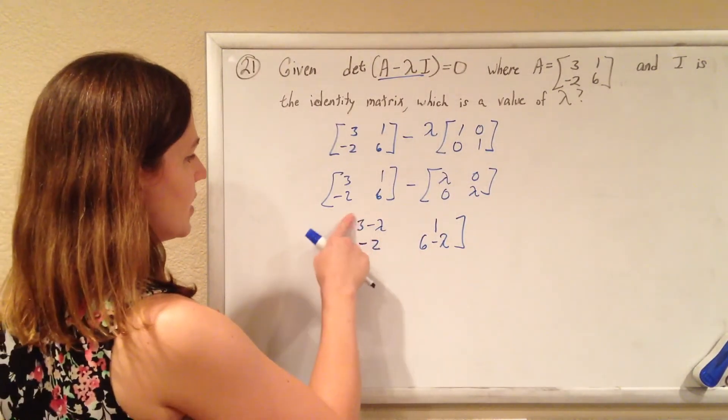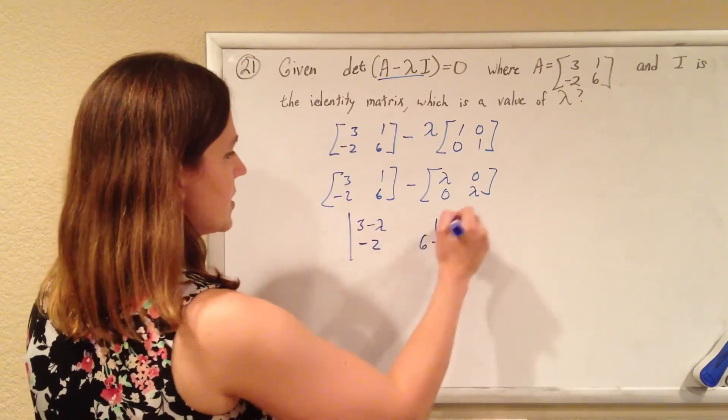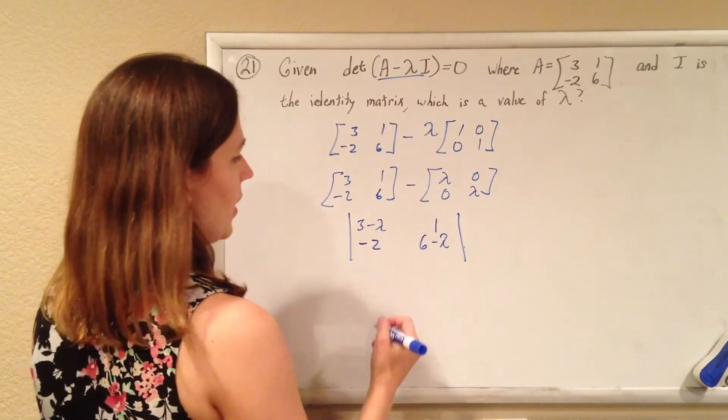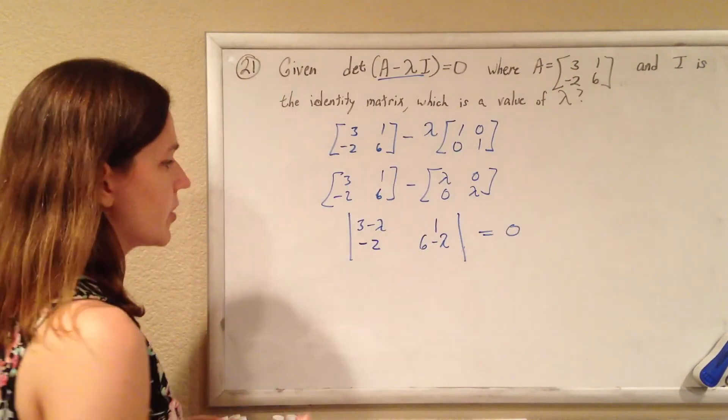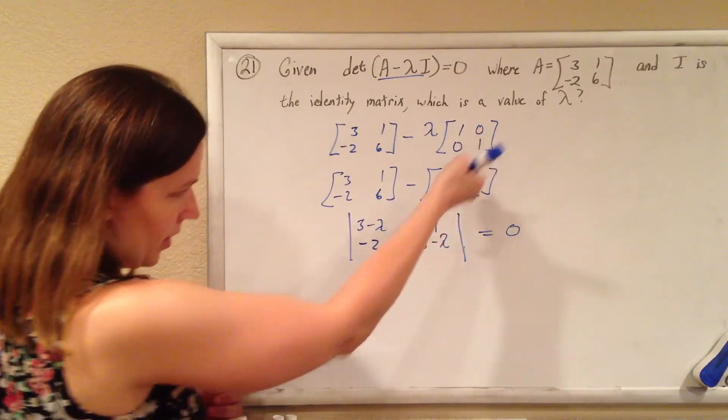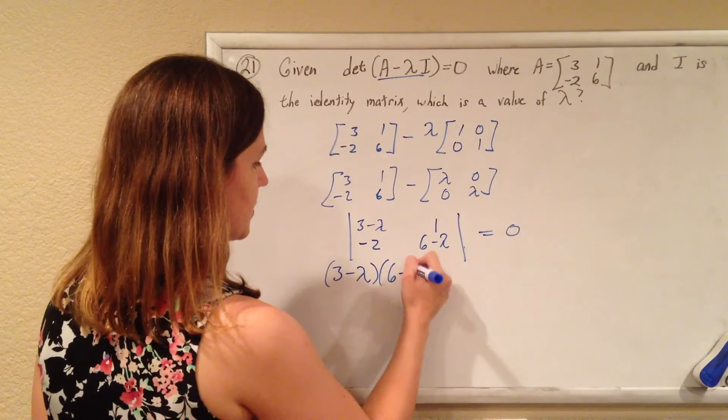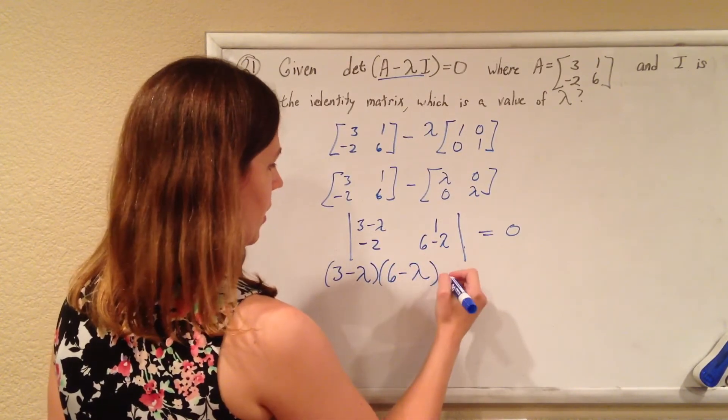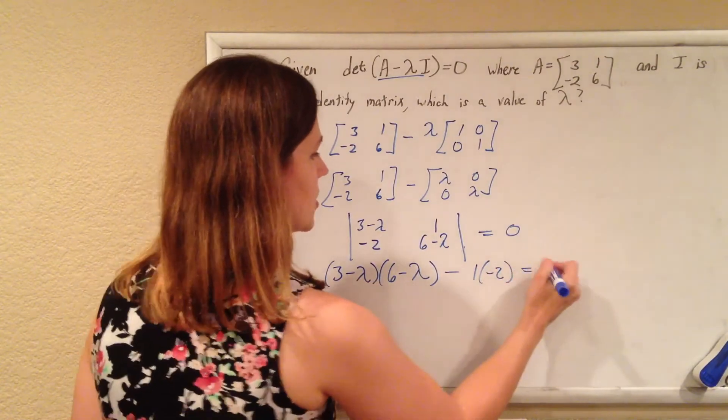And they want the determinant of this. So the determinant of this, they want that to equal zero. So let's, we know how to find a determinant, weird as it looks, multiply it times that, subtract that diagonal. So 3 minus lambda times 6 minus lambda, minus 1 times negative 2, should be 0.